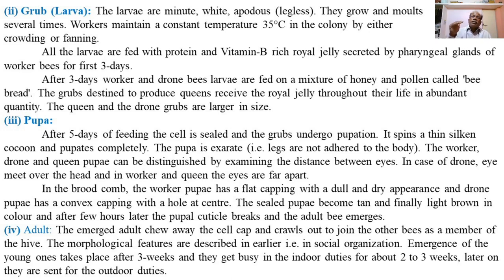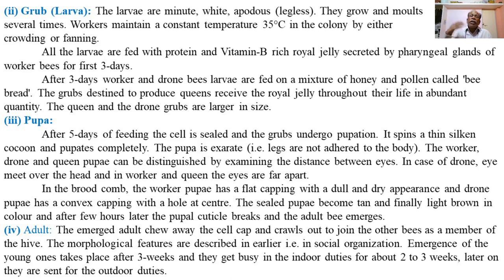After completion of pupation in the closed brood cells, the vermiform larva is transformed into the adult insect form, passing through the chrysalis or pupa — the inactive stage of the life cycle. The adult stage is the last stage of the life cycle. The young adult bee emerges by chewing or cutting the wax cappings, coming out of the respective brood cell after complete transformation.